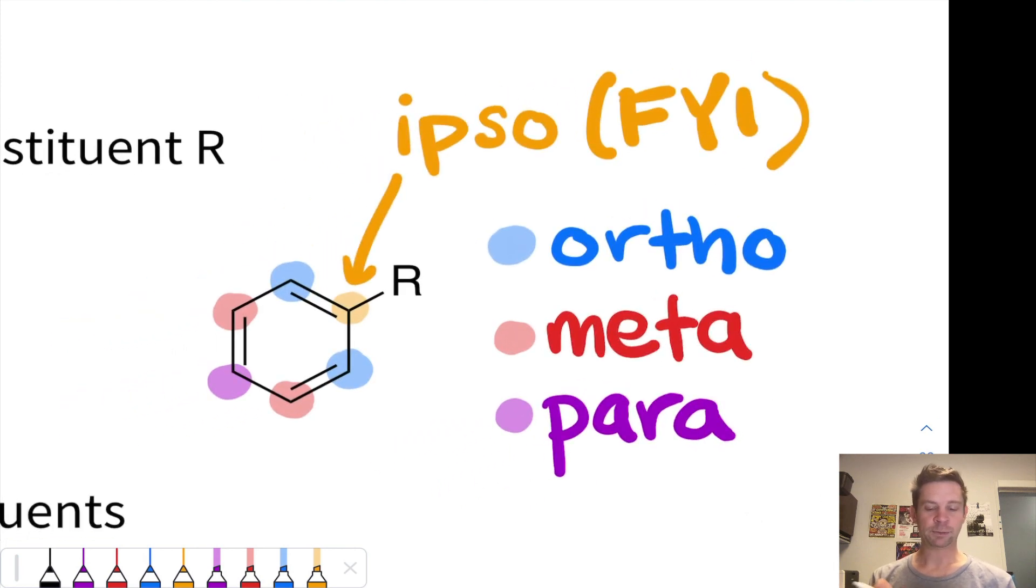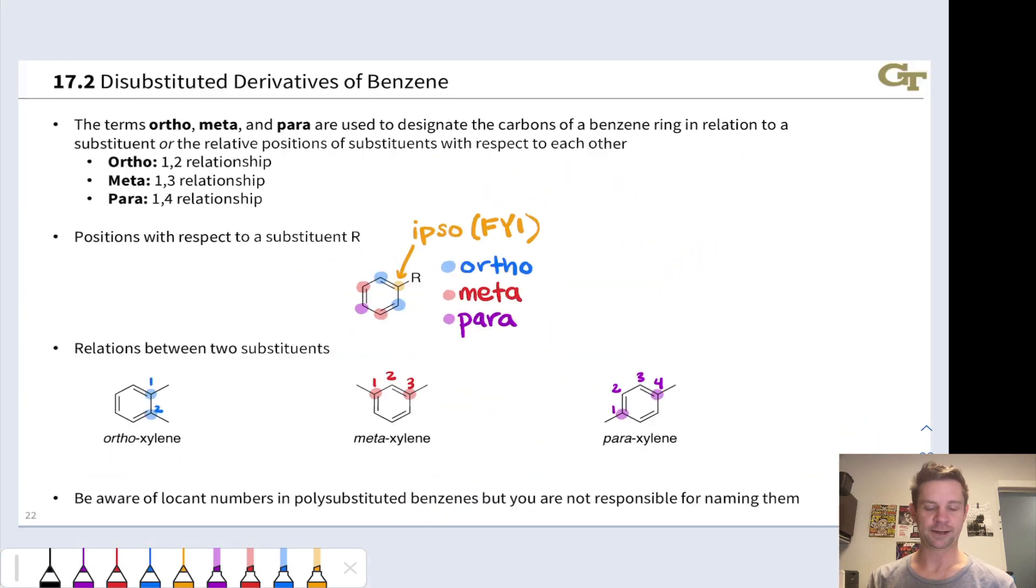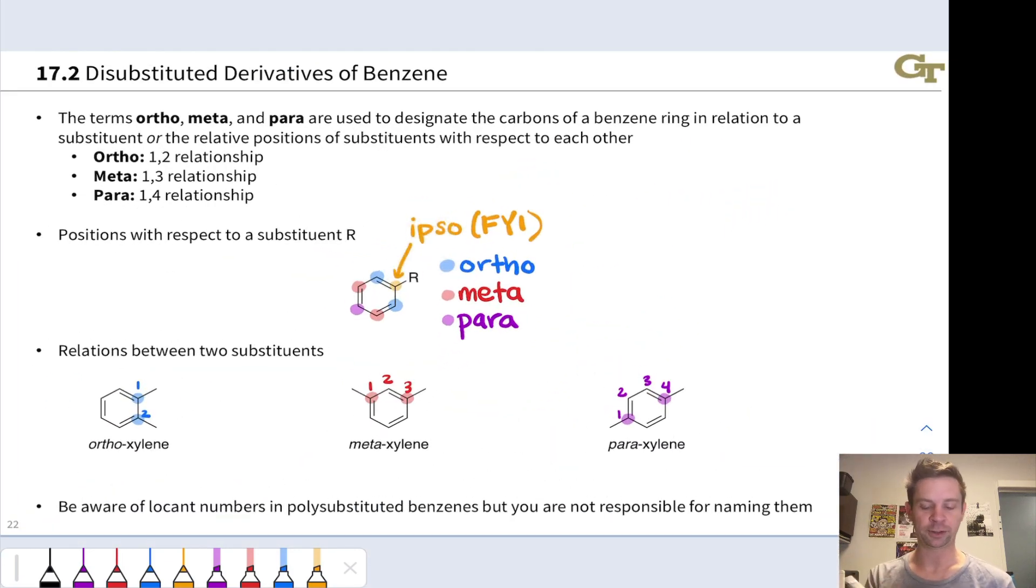This picture breaks down how we think about it in relation to a substituent R. So here's the R substituent. It's linked at this orange carbon. This is really just an FYI, but the carbon that the substituent is linked to is known as the ipso carbon. The carbons next door, the two positions with respect to R, are called the ortho carbons. The three positions in red are the metacarbons, and the four position is the paracarbons. So notice that there are two ortho carbons, these two positions, the two and six positions. The three and five positions are the meta positions, and there's only one para position, the four position right here. So this is how we think about ortho, meta, and para in relation to a single substituent R.